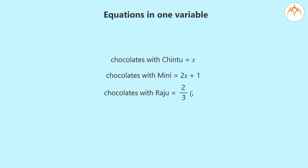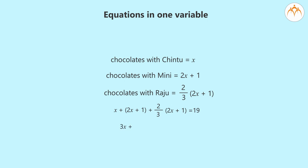The number of chocolates with Raju is two-thirds of Mini's, so Raju has 2/3 into 2X plus 1 chocolates. Since all of them together have 19 chocolates, we can write it as X plus 2X plus 1 plus 2/3 into 2X plus 1 equals 19. This simplifies to 3X plus 1 plus 2/3 into 2X plus 1 equals 19.